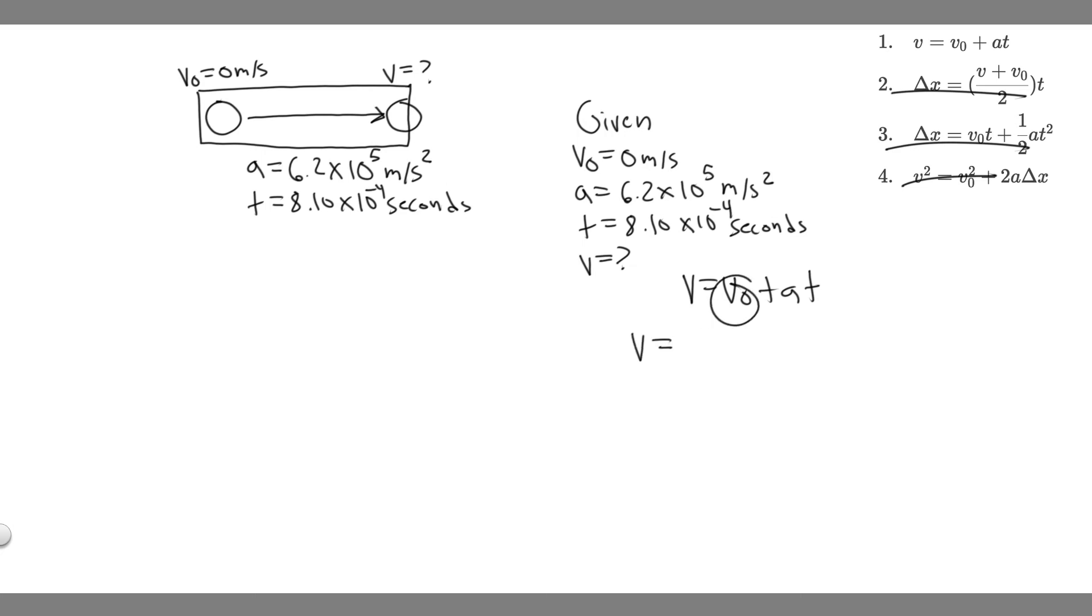Plugging it in, v equals v sub 0, which is just 0. 0 plus anything is just going to be this part. It's really just the acceleration, 6.2 times 10 to the 5 by how long, which is 8.1 times 10 to the minus 4. If you go ahead and do this, 6.2 times 10 to the 5 and then multiply by 8.1 times 10 to the minus 4, you're going to get 502.2, and then the units are meters per second for velocity. So you can round to 502 if you'd like.